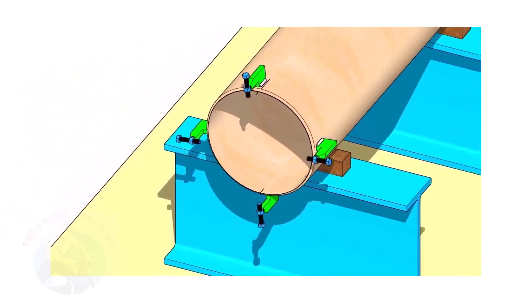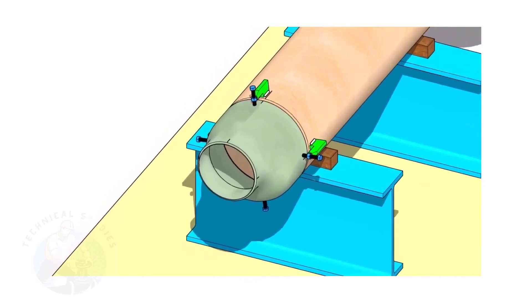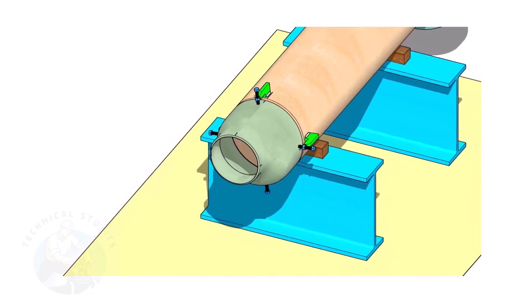If you don't have a pipe aligning clamp, tack weld four jack bolts 90 degrees apart as shown. Put the reducer in the clamps. Slightly tighten the bolts.